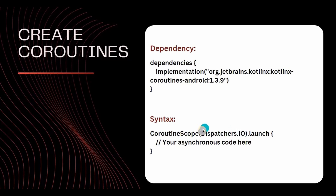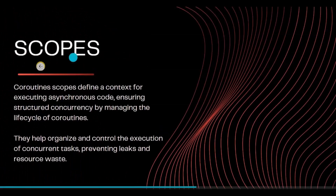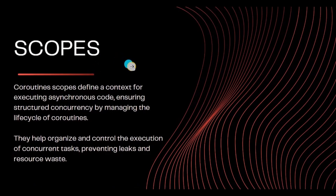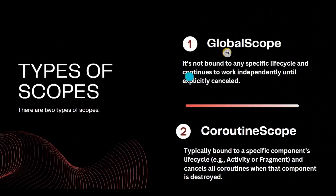First, let's understand what is scope. Scope basically determines the lifetime and behavior of coroutines by executing asynchronous code. Asynchronous in coroutines means that tasks can be executed at the same time without blocking the main thread. We have two types of scope: GlobalScope and CoroutineScope. You can use any scope based on your requirement.